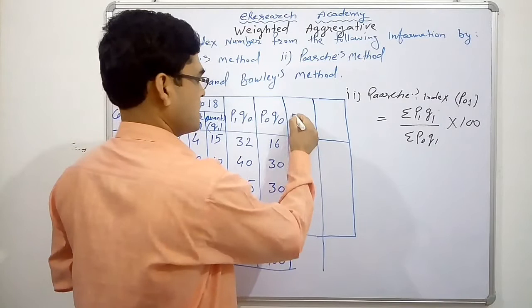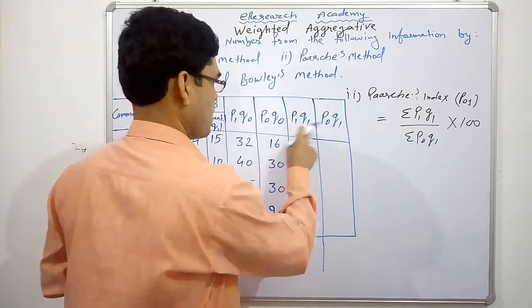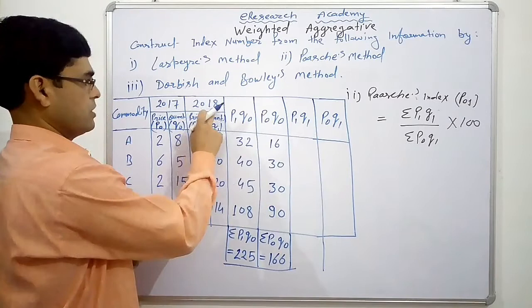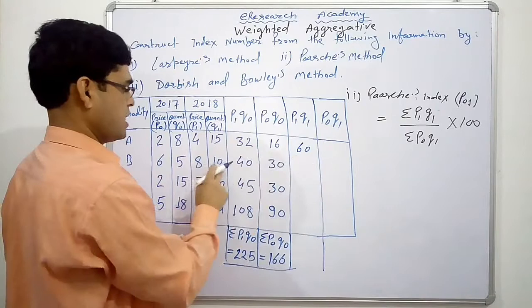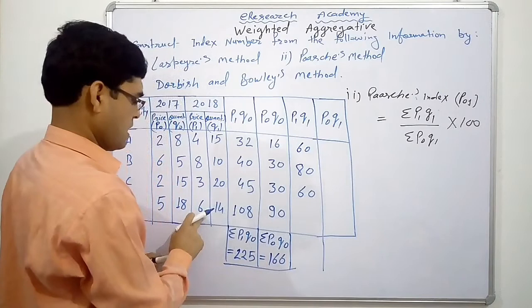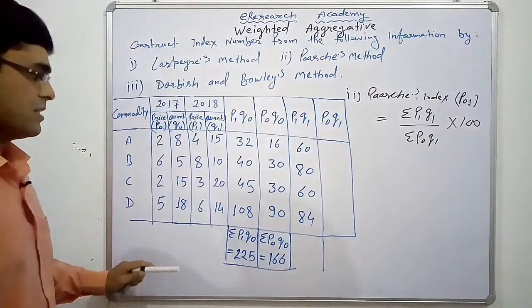So, this one is P1 Q1, P0 Q1. For current year only. Price and quantity of current year. This is 2018. 4 into 15, 64. 8 into 10, 80. 3 into 20, 60. 6 into 14, 84.